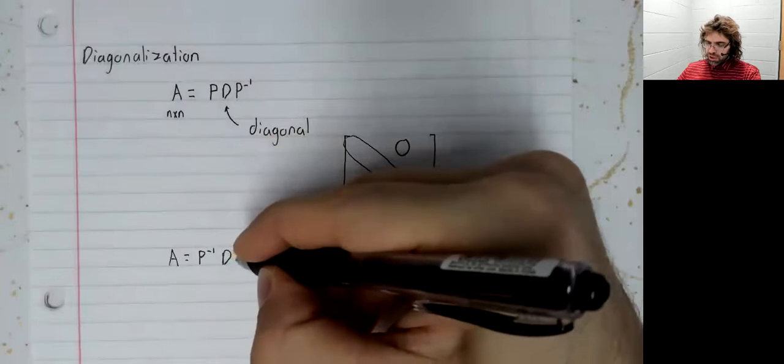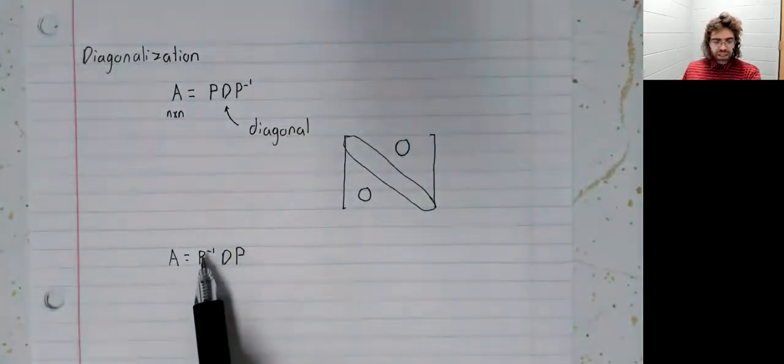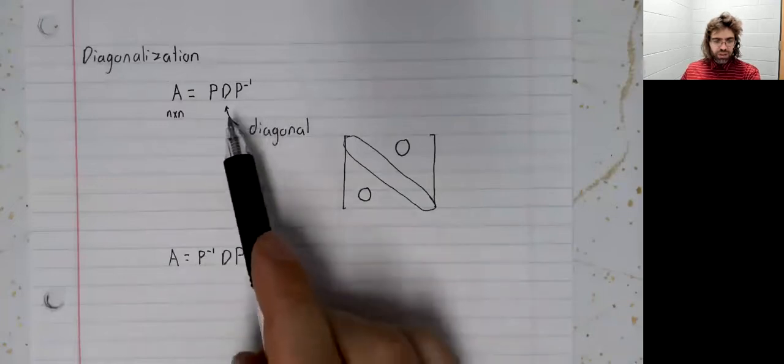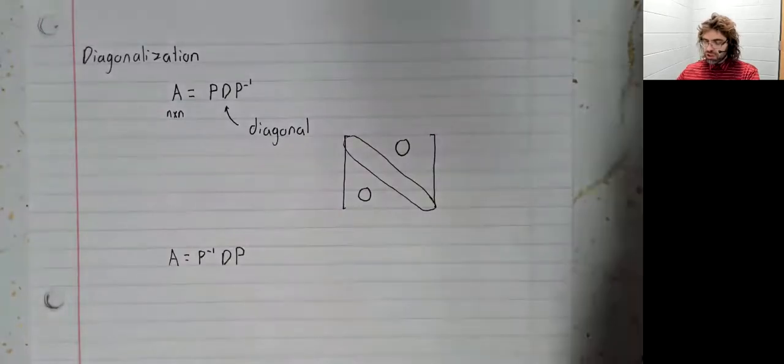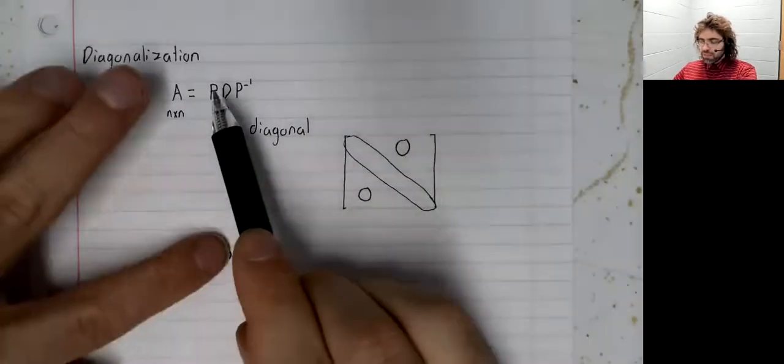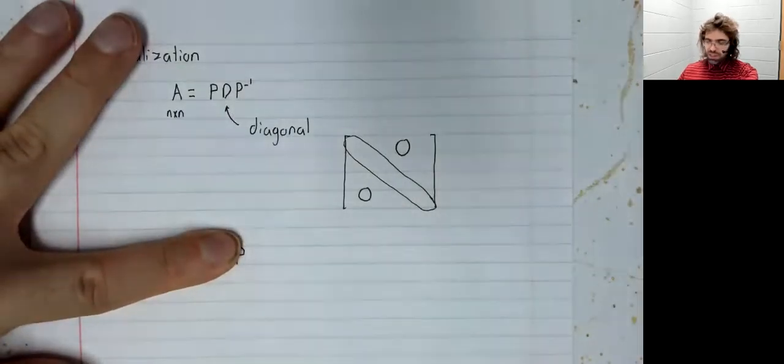In particular, you sometimes see the inverse on the left instead of on the right. This isn't a real difference. In particular, if A is P inverse times D times P,